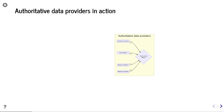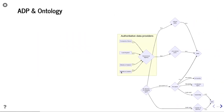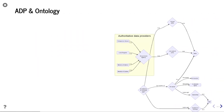We have a range of different authoritative data providers: Companies House, the Land Register, the Ministry of Interior, and the Ministry of Justice, each with different functions within the ecosystem. We've built a small ontology on top of it. Each of these government agencies are non-natural parties, which means they're also a party. There are also natural parties, which are living, breathing people.